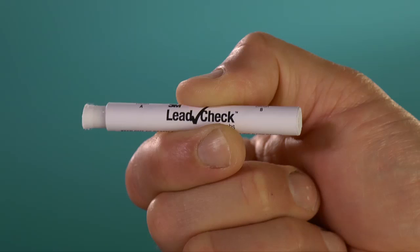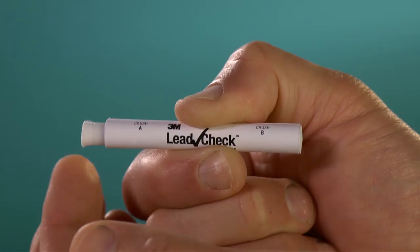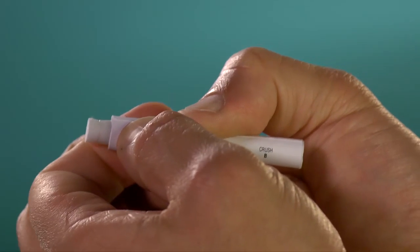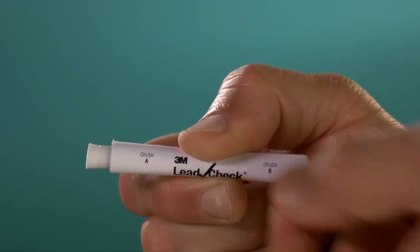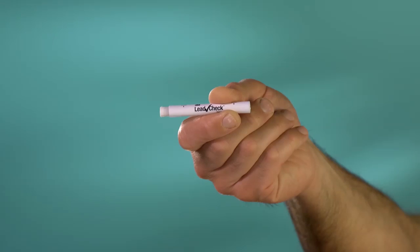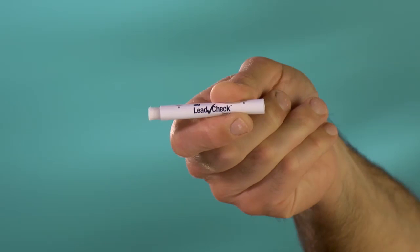Now, activate the 3M LeadCheck swab by firmly squeezing each end at the points marked A and B on the cardboard cover until you can feel and hear the ampules inside being crushed. Shake the tube vigorously for a few moments to be sure that the chemicals inside have mixed. The 3M LeadCheck swab is now activated and ready for use.